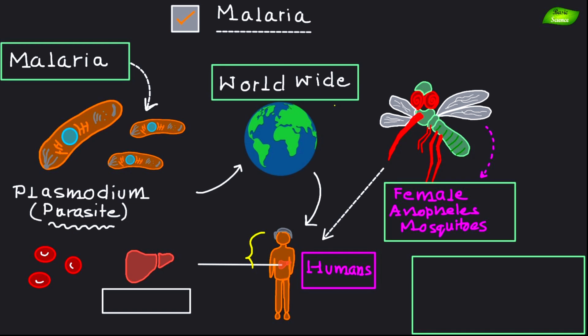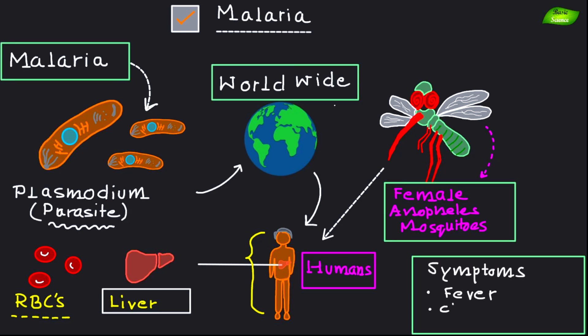Once inside the body, the parasite multiplies. When the parasite is inside the body, it will multiply within the liver cells first before entering the red blood cells (RBCs). So first the liver is affected, and after that the RBCs get affected, leading to symptoms like fever, chills, and anemia — all complications of the parasite multiplying inside the human cells, including the liver and RBCs.